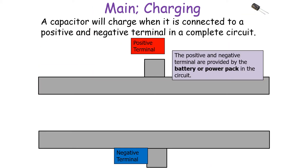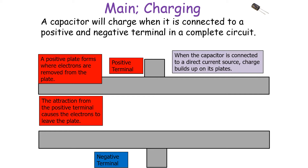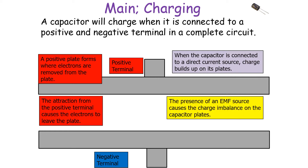A capacitor will charge when it's connected to a positive and negative terminal in a complete circuit. The positive and negative terminals are provided by the battery or power pack. When the capacitor is connected to a direct current source, charge builds up on its plates. A positive plate forms where electrons are removed from the plate — the attraction from the positive terminal causes the electrons to leave the plate, so the presence of an EMF source causes the charging imbalance on the capacitor plates.